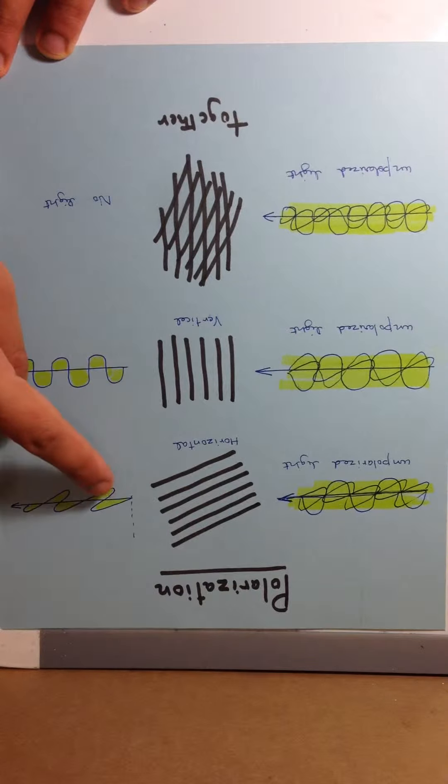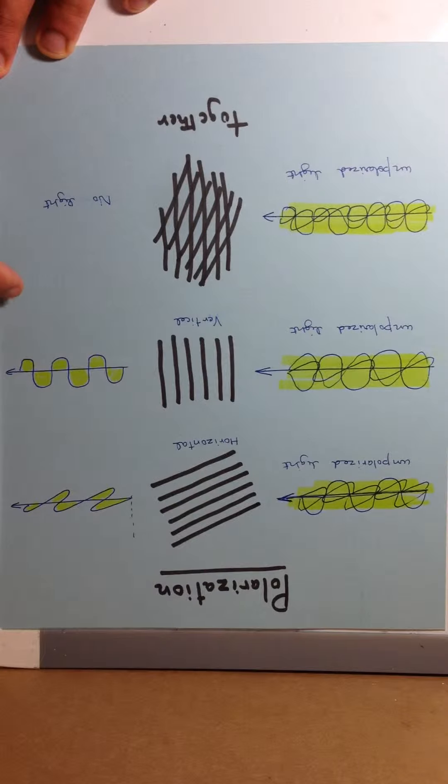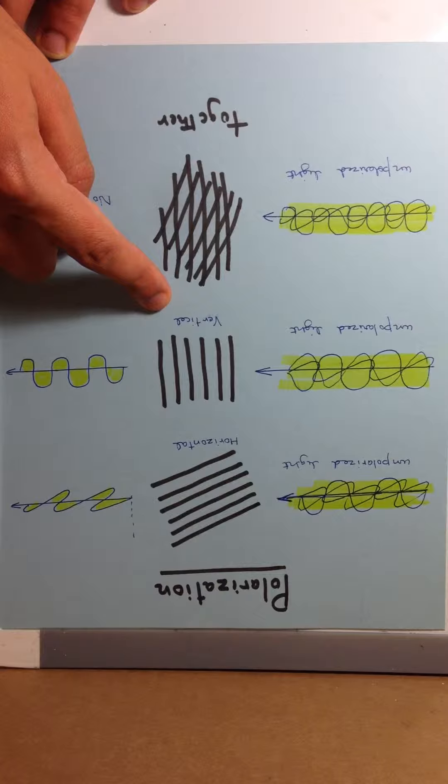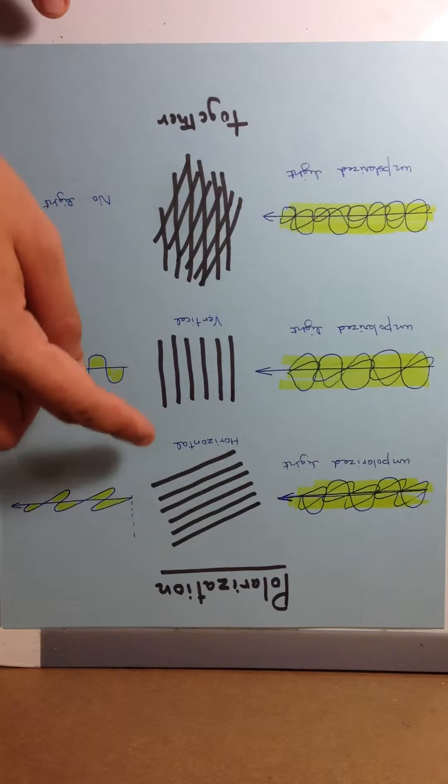Similarly, in the vertical direction we have vertical polarization. However, when I actually combine two polarizers in perpendicular directions, there is no light on the other end when I pass unpolarized light through.